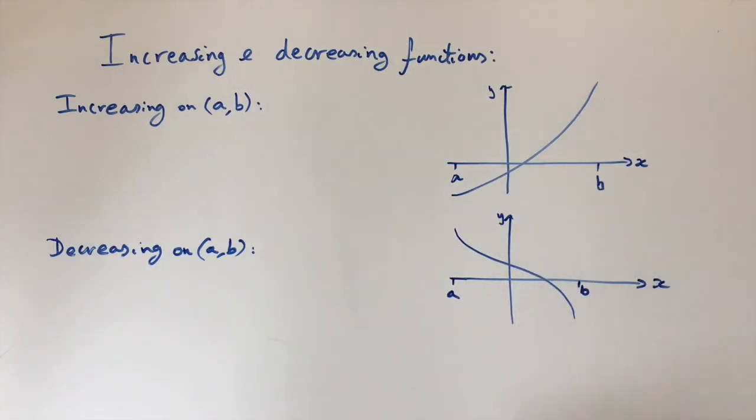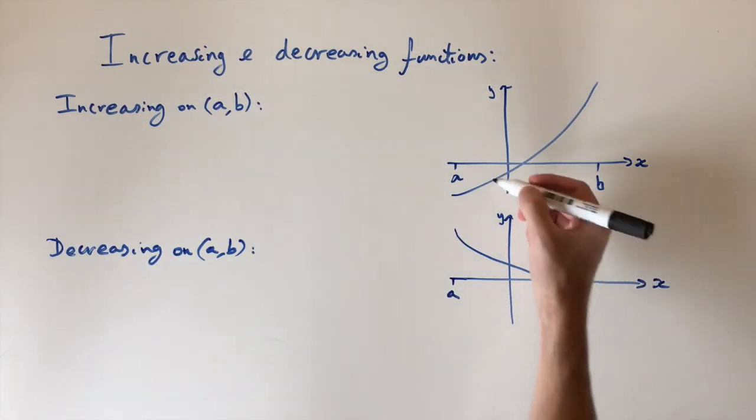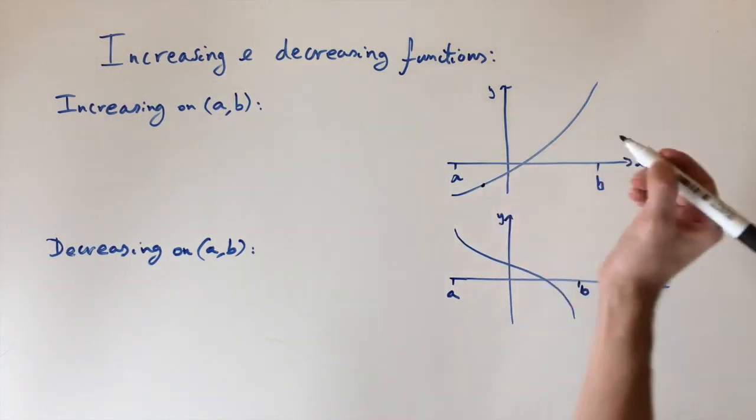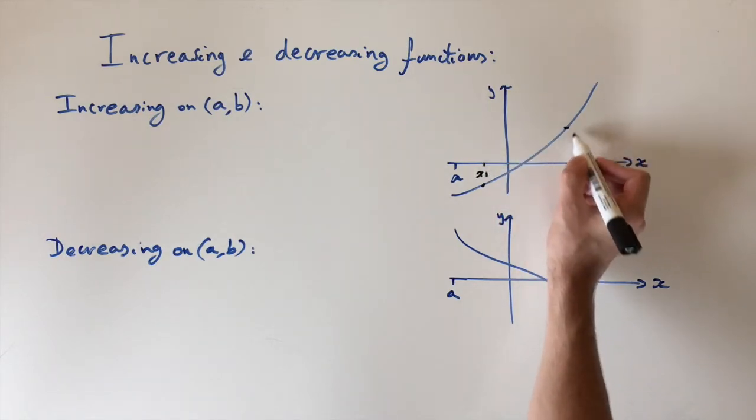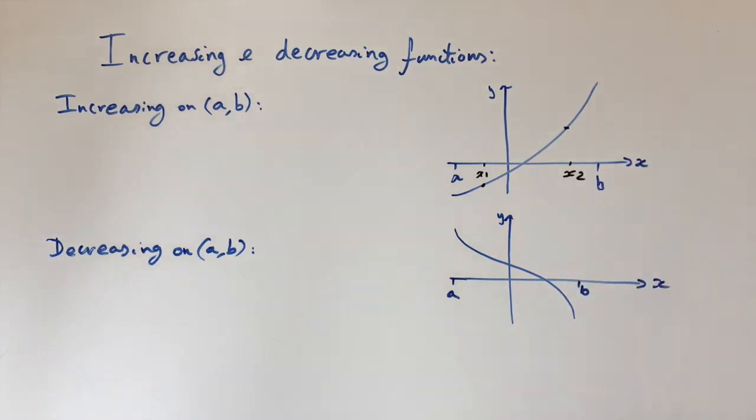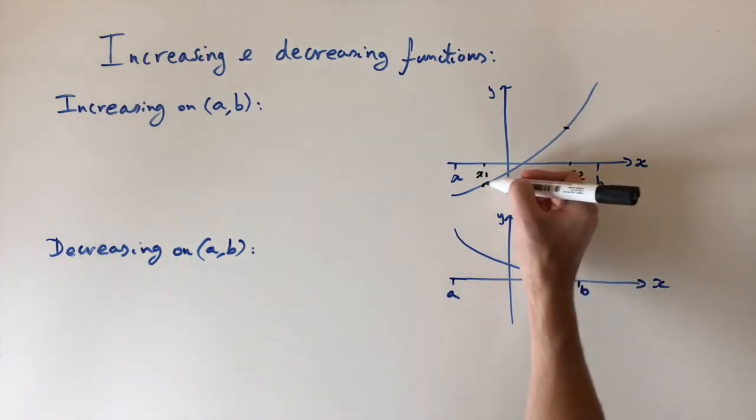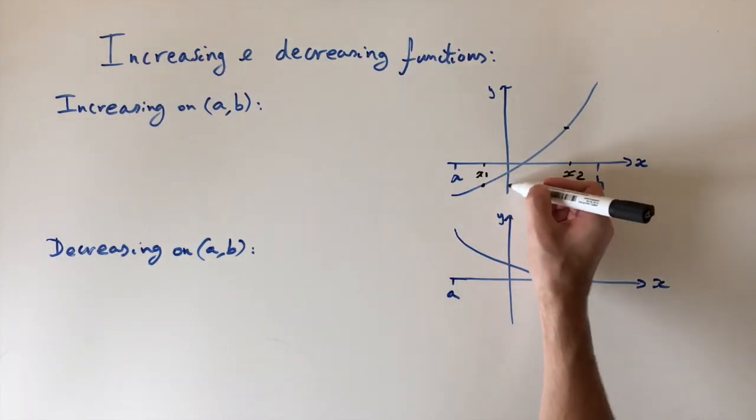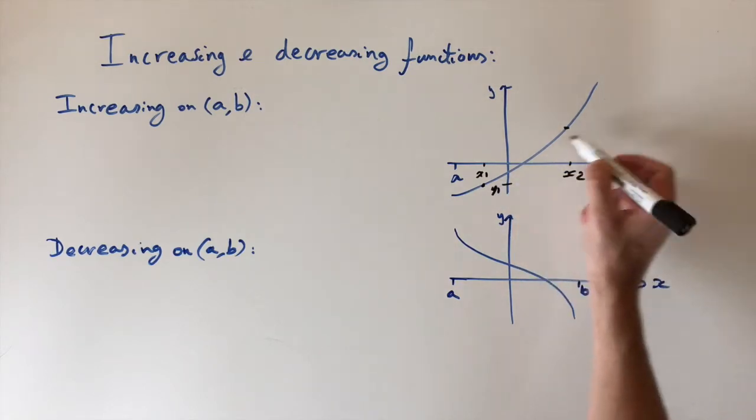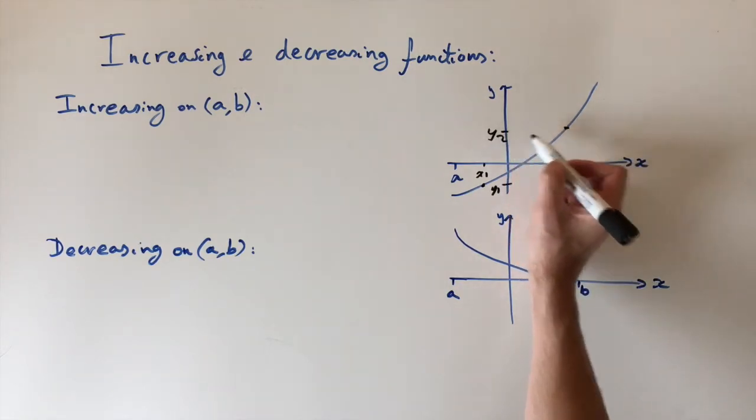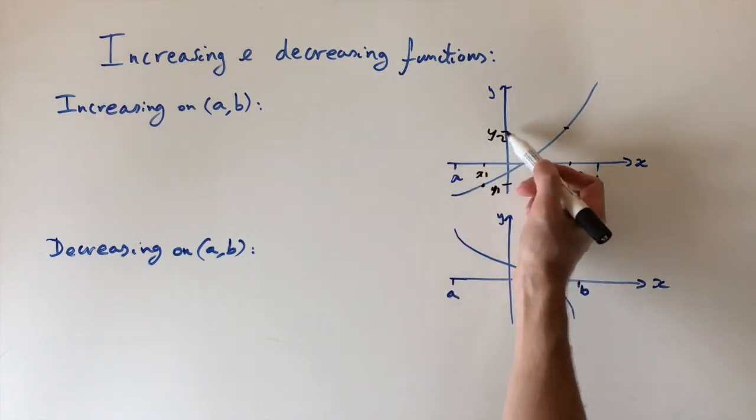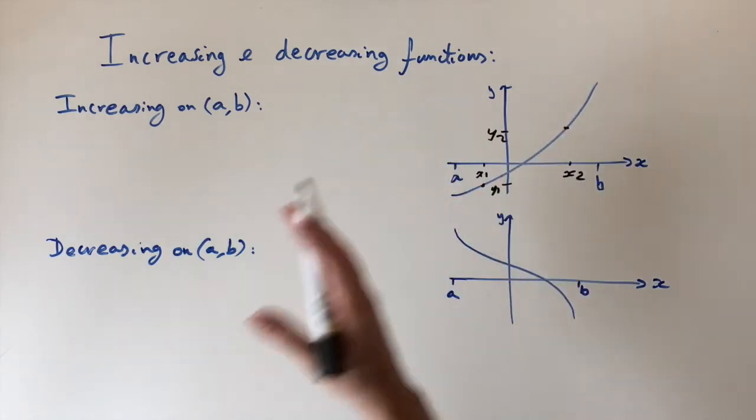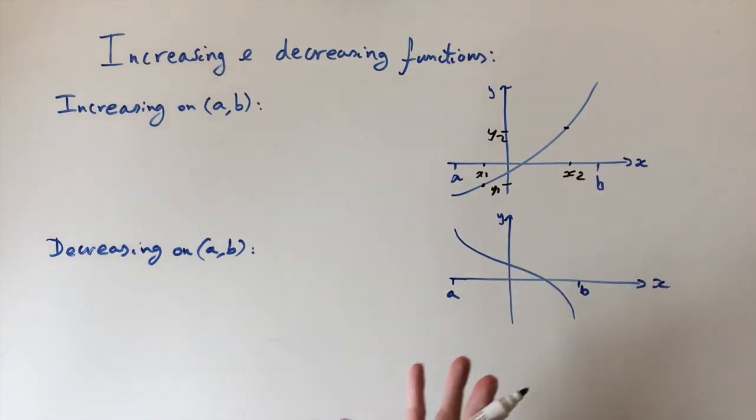How do we write that down mathematically in a way that's rigorous? So the way we do that is we consider any two points in this region. Let's say this one is x1 and this one here, this corresponds to the x value being x2. And then what we do is we look at the output of this function. So this is the output. I can call it y1, y2. Then because this graph is increasing the second output value is always going to be higher because as we move forward in time, the graph always goes up.